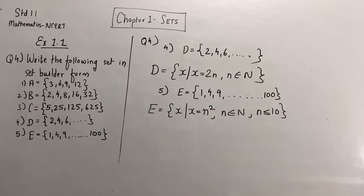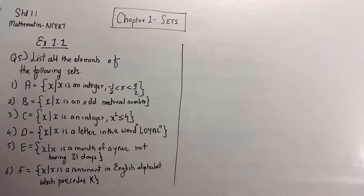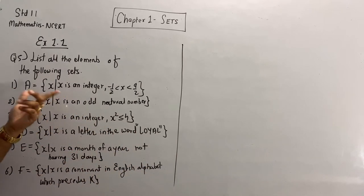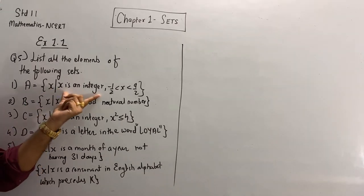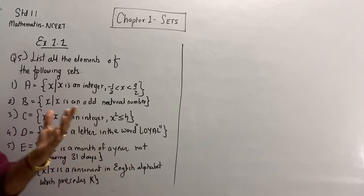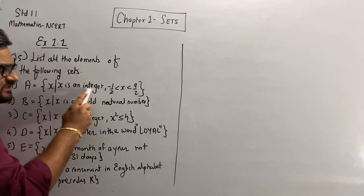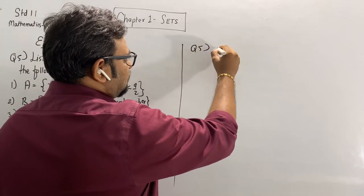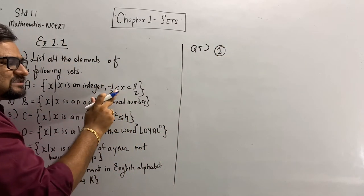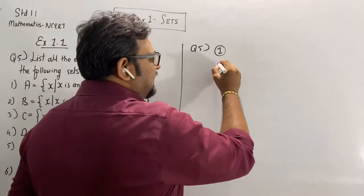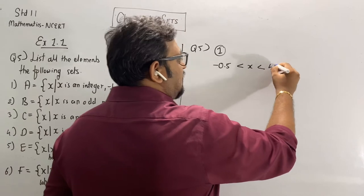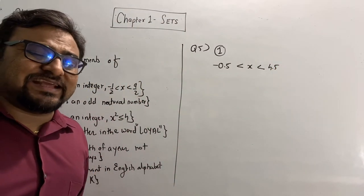Now let's move to question number 5: list all the elements of the following sets. In question number 4 we were writing in property method — set builder form. Now in question 5 we are using the listing method, meaning the property is given and we have to list it down. So the first one: A = {x such that x is an integer and -1/2 < x < 9/2}.